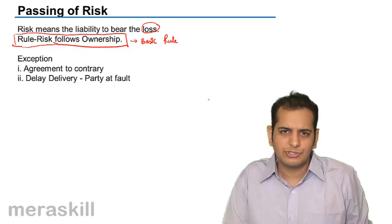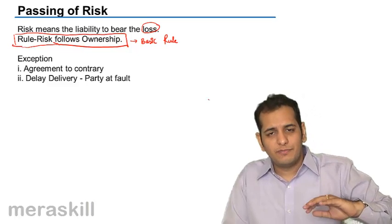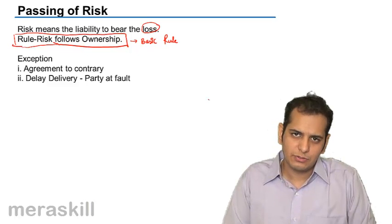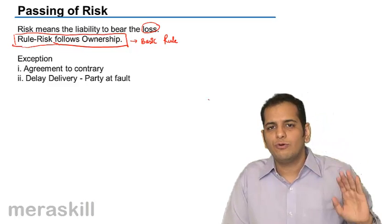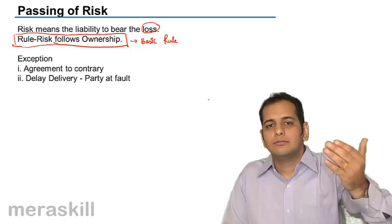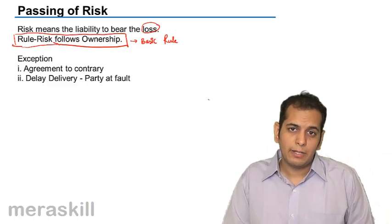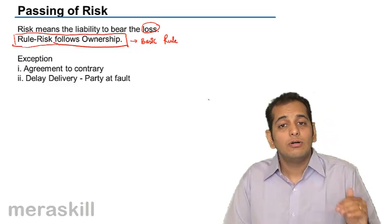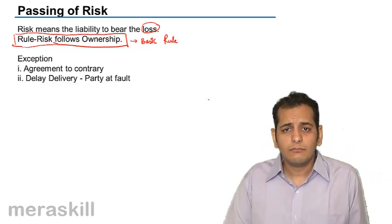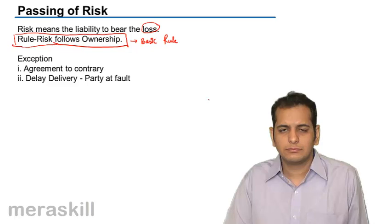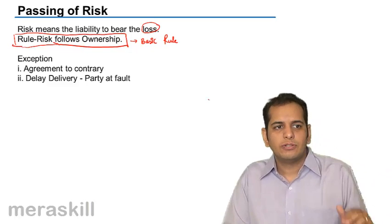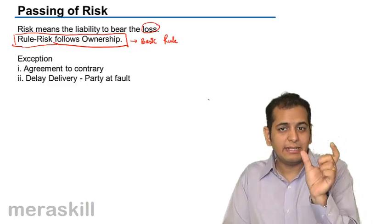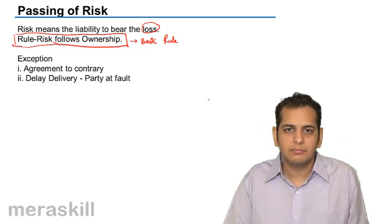So normally risk follows ownership. However, when a contrary intention is expressed in the contract, risk will not follow ownership. It will be transferred from seller to buyer when both parties have contracted. Or when the seller undertakes to deliver and makes a delayed delivery, for the delayed period, the seller remains liable.